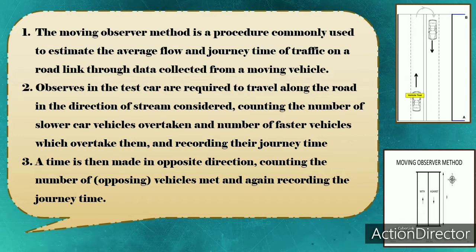Observers in the test car are required to travel along the road in the direction of the stream considered, counting the number of slower vehicles overtaken and the number of faster vehicles which overtake them, and record their journey time. A run is then made in the opposite direction, counting the number of opposing vehicles met and recording the journey time. There are two pictures that relate to the moving observer method.